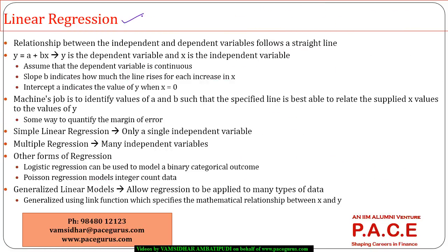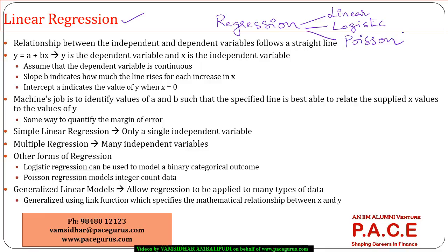Within linear regression, it is one form of the overall umbrella of regression models. We also talk about logistic regression, Poisson regression, and various other kinds of regression. Regression, as a definition, is a relationship between the dependent variable and one or more independent variables. In the case of linear regression, the relationship between the dependent and independent variable follows a straight-line relationship.